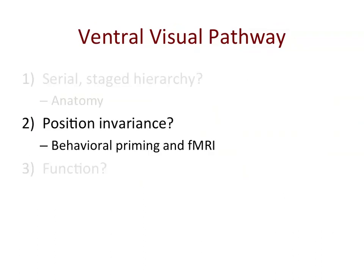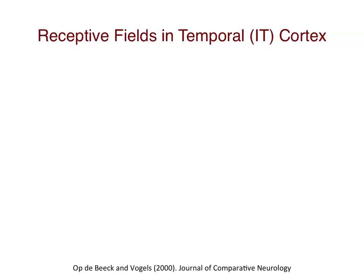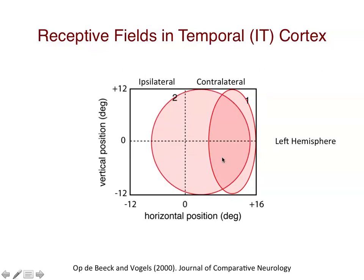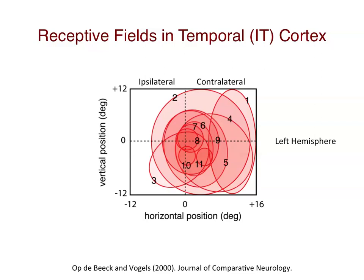Second, position invariance. I'm going to use behavioral priming and fMRI to look at this issue. Although there are reports that receptive fields in inferior temporal cortex of the monkey can be extremely large, if you look more closely the story is more complicated. Here I'm showing data collected by Hans Obdebeck and Rufan Vogels, where they measure the receptive field size of neurons in the left hemisphere of the monkey. The receptive fields tend to be in the contralateral hemifield — recording from the left hemisphere, receptive fields in the right part of visual space. There is also great heterogeneity in the sizes of these receptive fields, varying from quite small to quite large. All of this suggests there's a lot of position information in inferior temporal cortex, and maybe we shouldn't think this is producing position invariant representations.